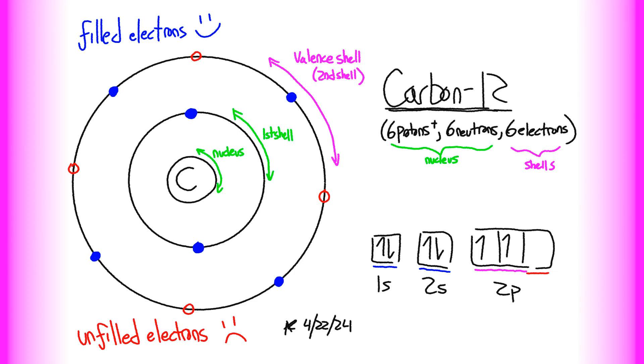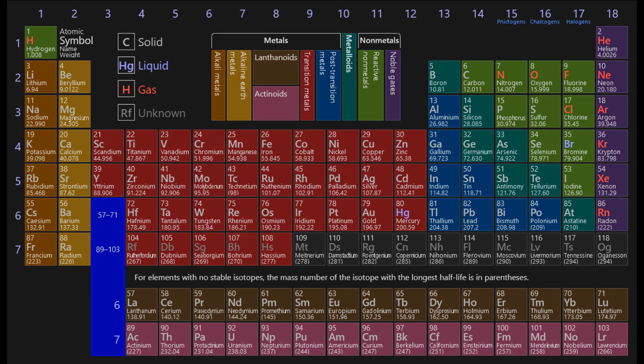Let's focus on the first three periods for a bit, so the only columns, aka groups we have to worry about, are 1, 2, and 13 through 18, which makes a total of 8. Groups 1 and 2 have 1 and 2 valence electrons respectively, 13 has 3, 14 has 4, and so on until you get to group 18, which has a full valence shell of 8.